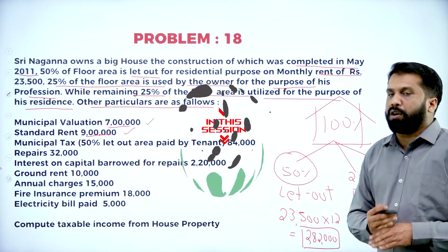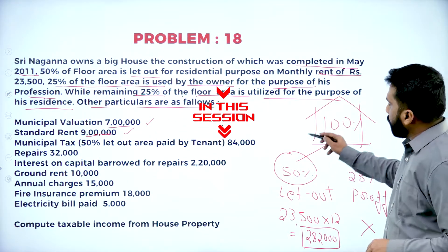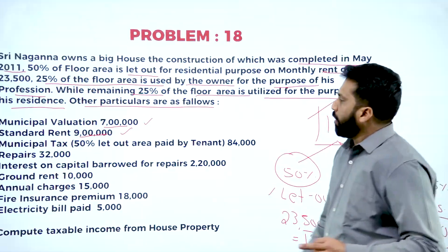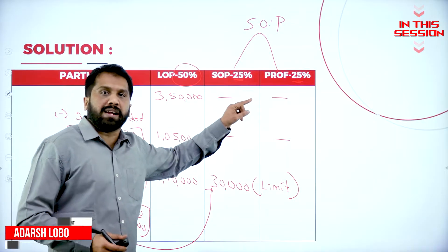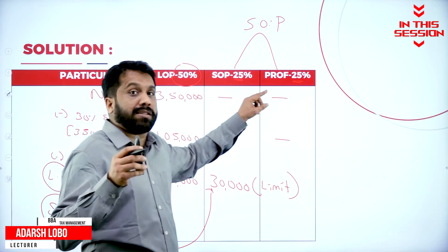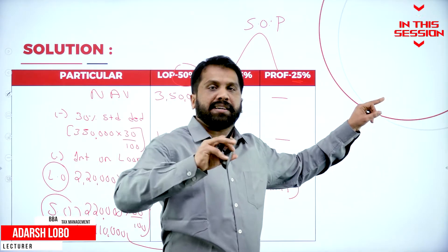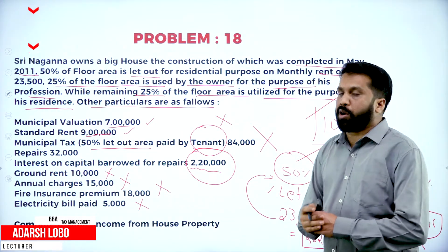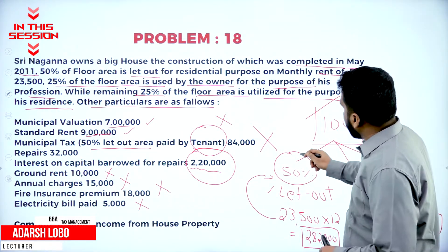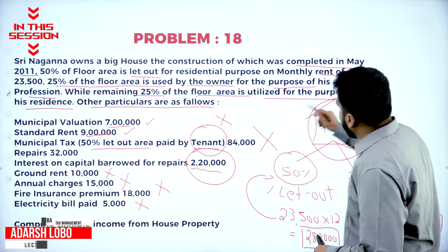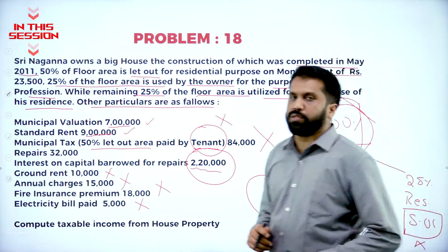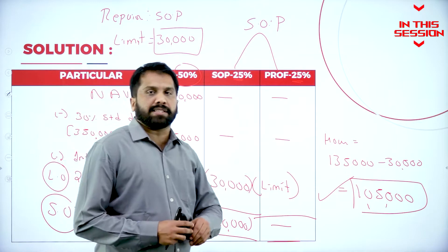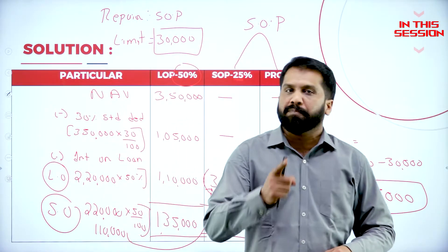We are doing calculation only for the let-out portion. If it is self-occupied, up to ₹30,000 you can take as interest. So ₹2,20,000 means it is not only for this; it is for the complete house. So ₹1,35,000 minus ₹30,000 — your final answer is ₹1,05,000.